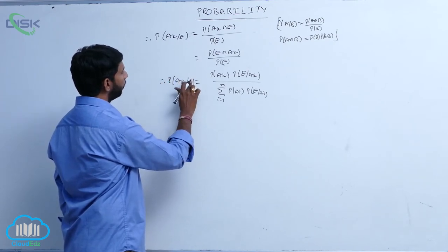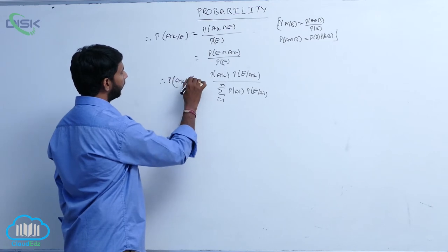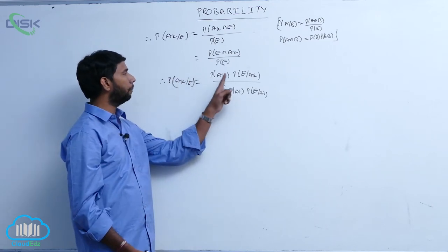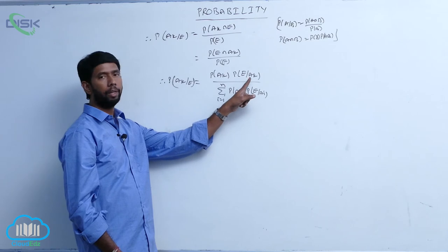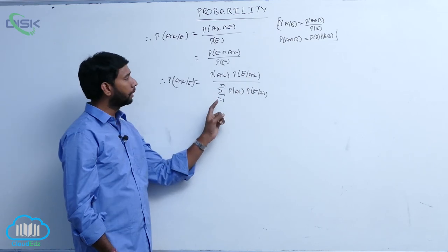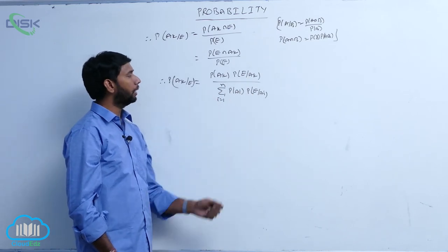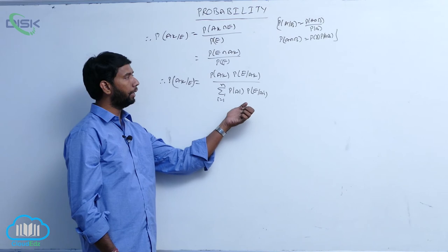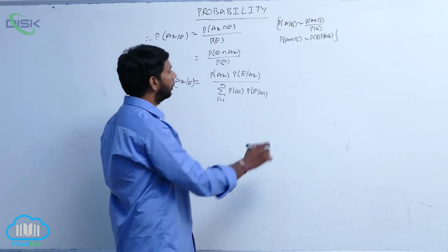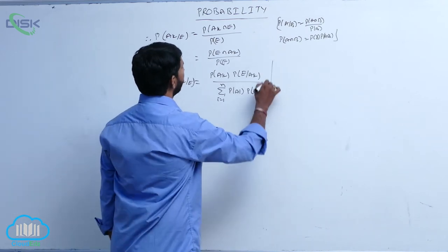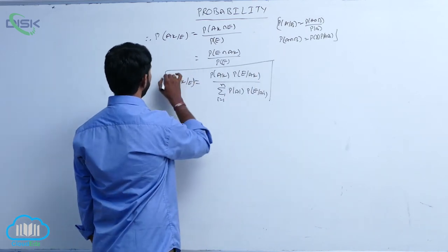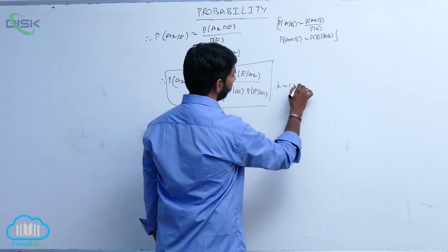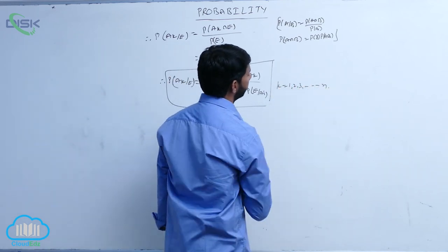Bayes' theorem of probability is: P of A k given E is equal to P of A k into P of E given A k, divided by sigma i equals 1 to n of P of A i into P of E given A i, where i and k are equal to 1, 2, 3, and so on up to n.